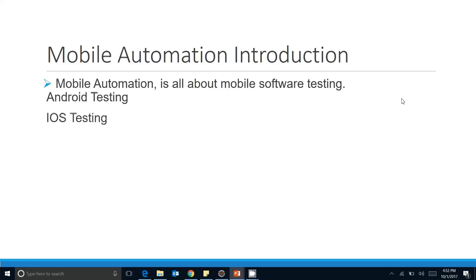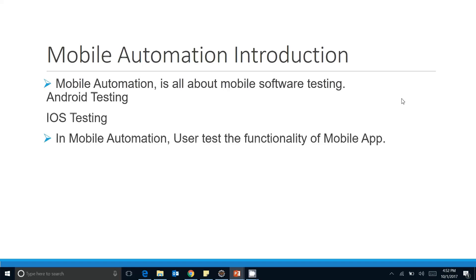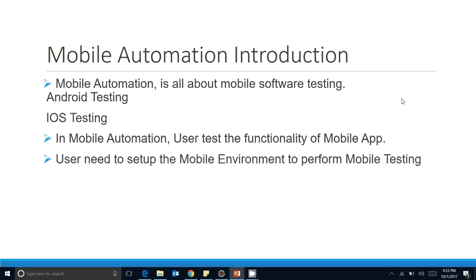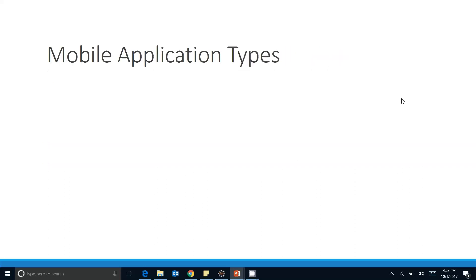We will start with Android testing then move to iOS testing. In mobile automation, the user tests the functionality of the mobile app. With Appium we will do functional testing — load testing is not part of mobile testing because the load ultimately goes to the server, so other tools handle that. The user first needs to set up the mobile environment. In coming videos we will see how to set up the environment, install Appium, install Android-related stuff, and the related plugins needed for automation.